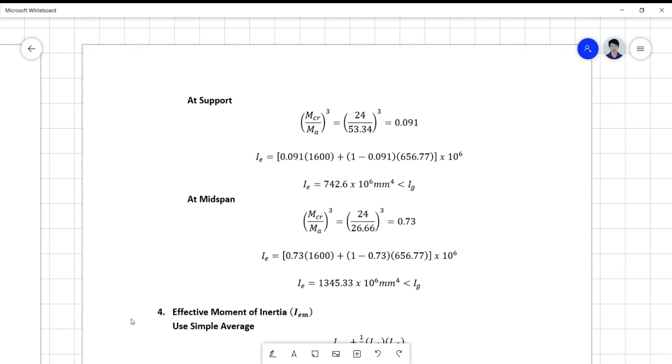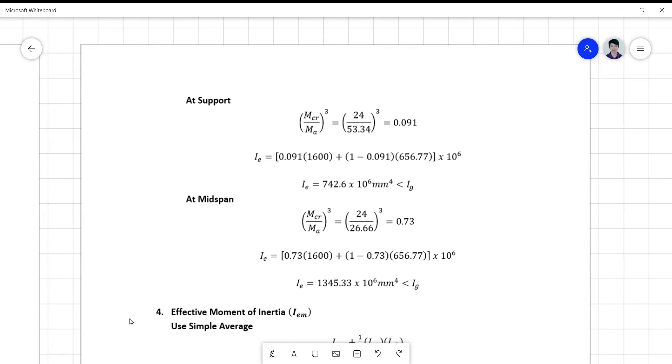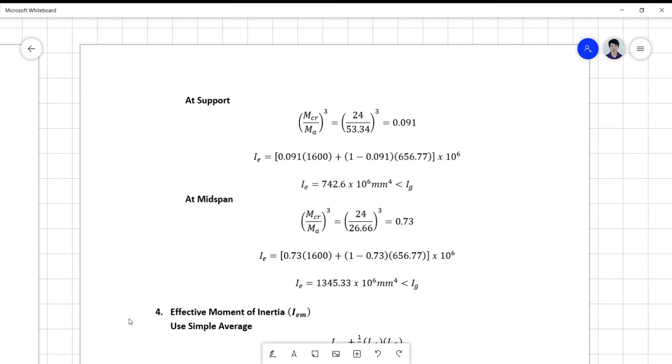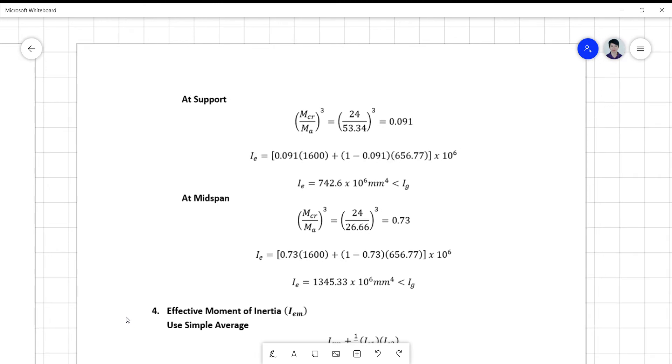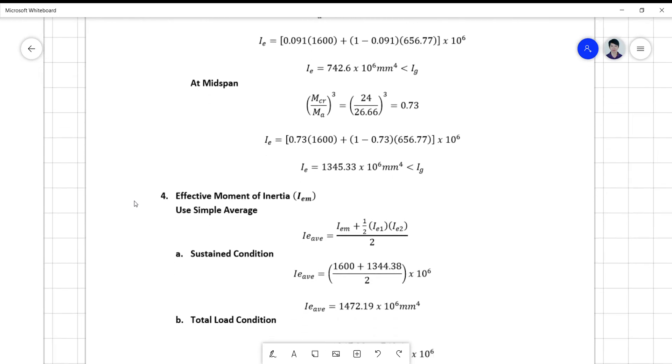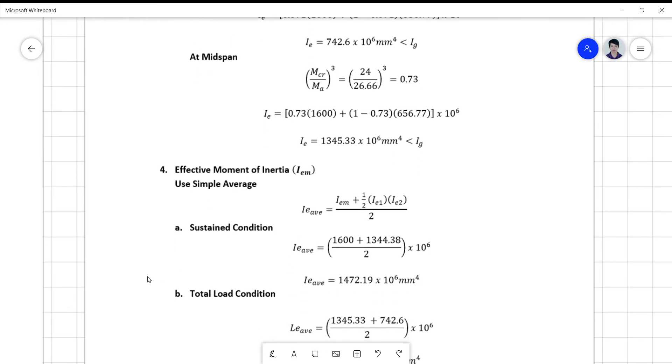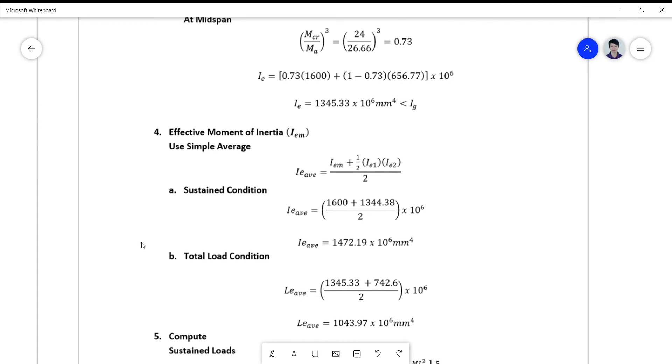So we have actually four effective moments of inertia: two at the sustained loadings and two at the total loadings. And we ought to use the simple average in getting the final effective moment of inertia to be used in your deflection calculation.